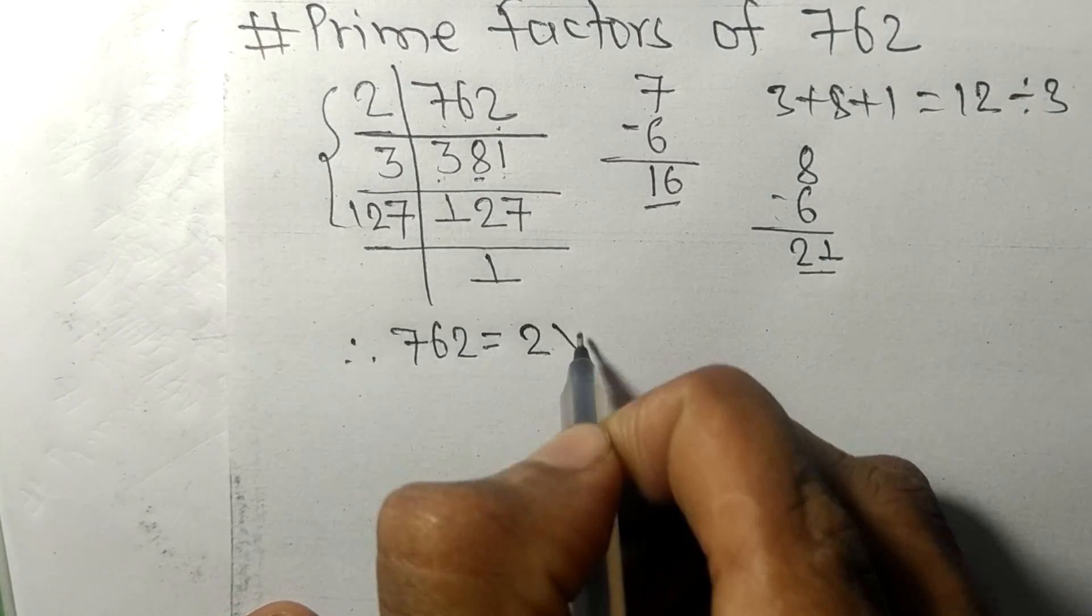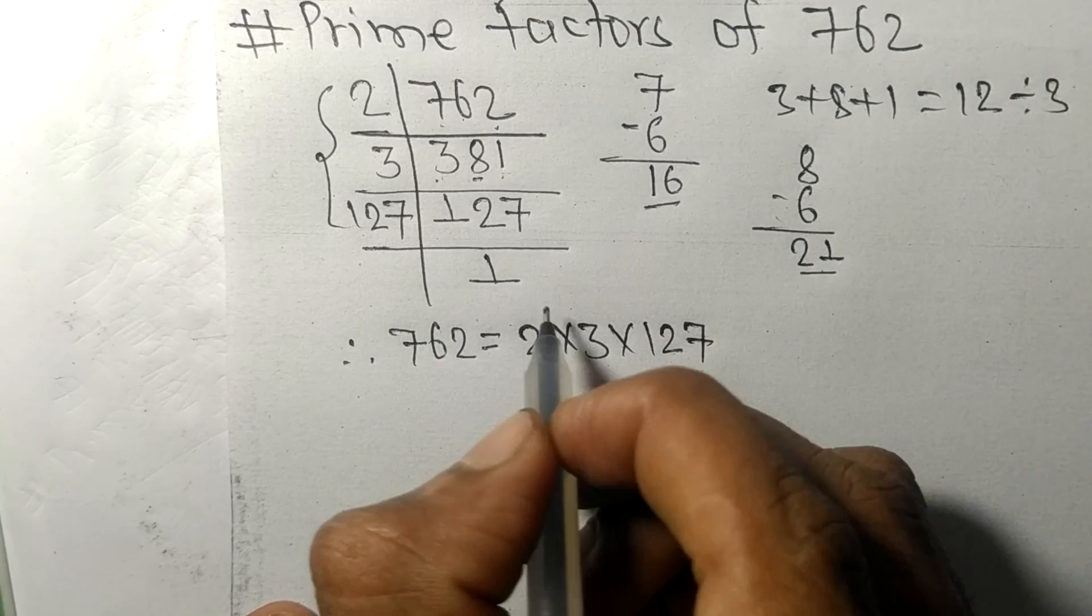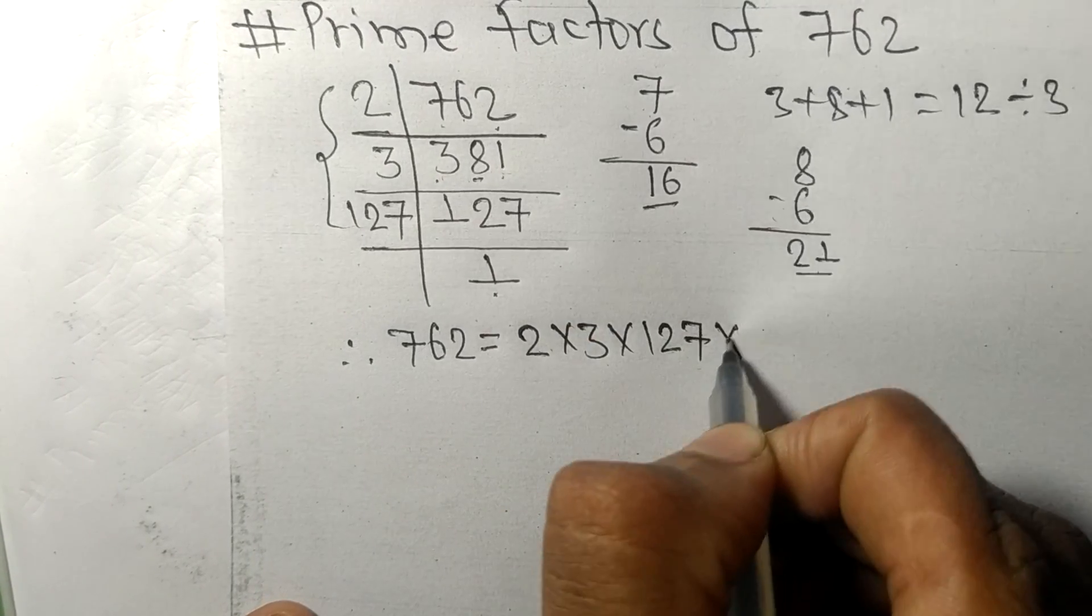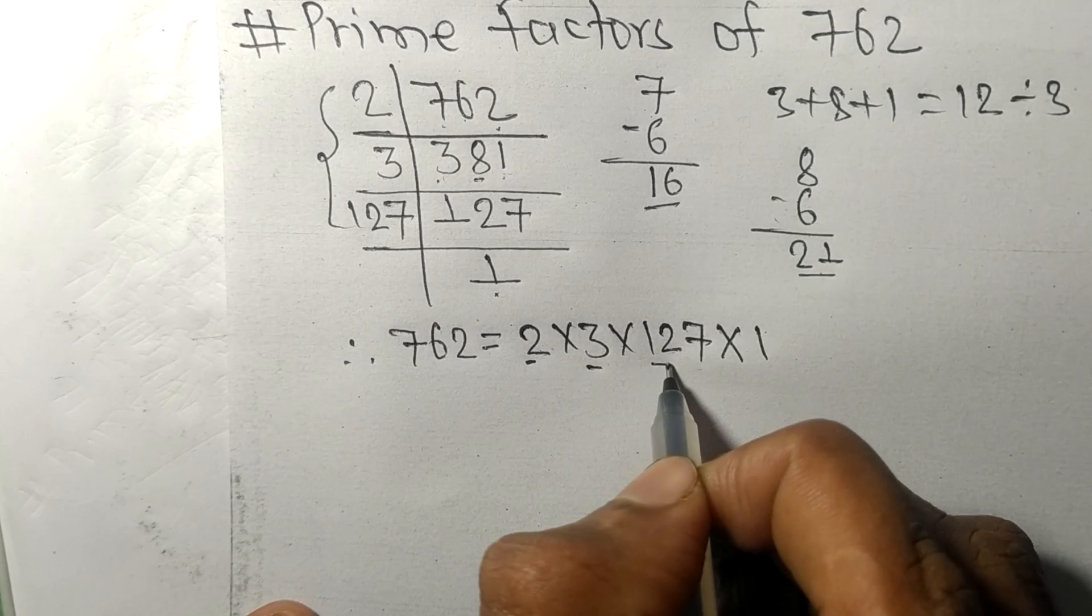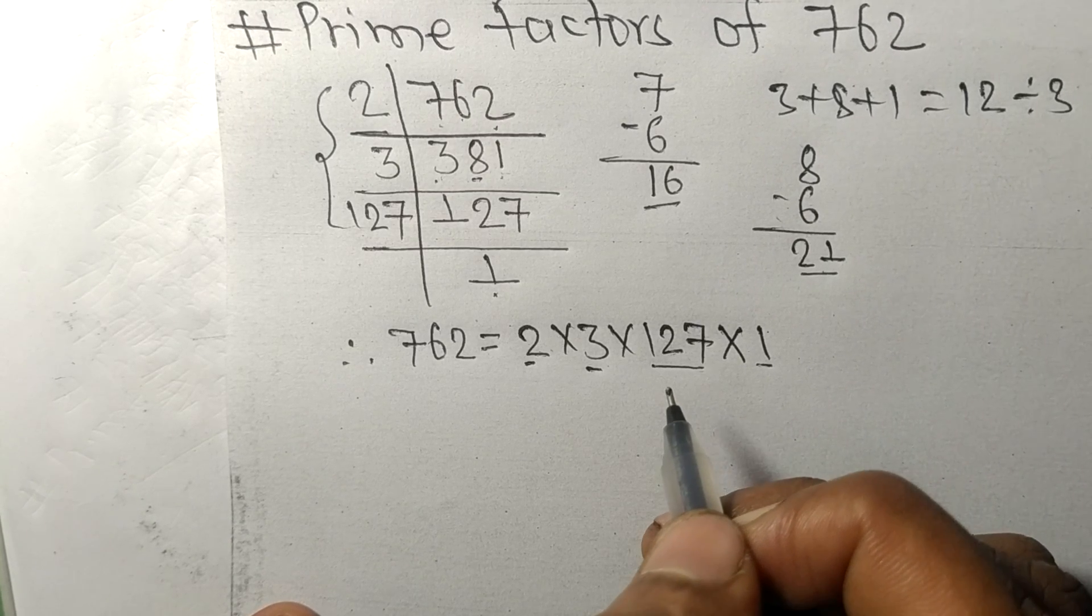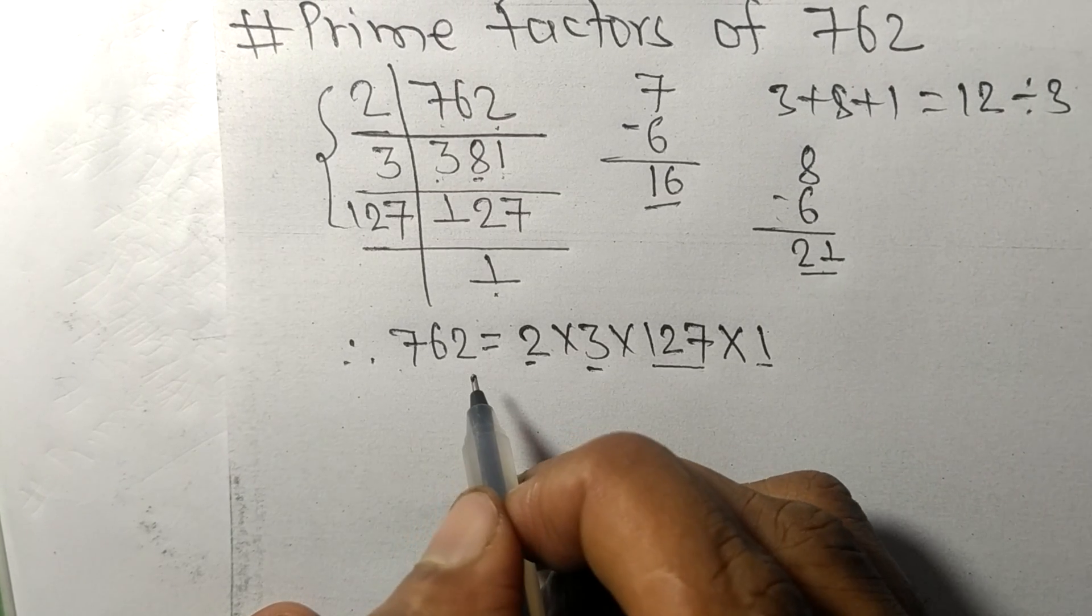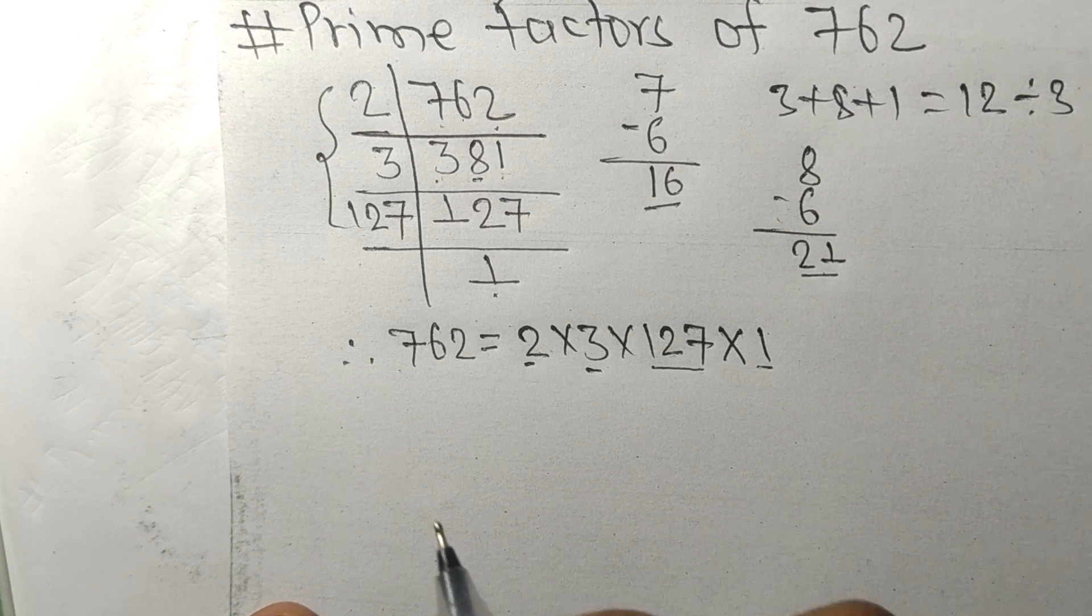It is 2 times 3 times 127, and from here it is 1. So 2, 3, 127, and 1 are the prime factors of 762. So this much for today, and thanks for watching.